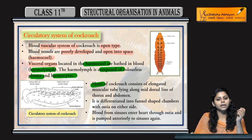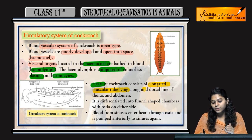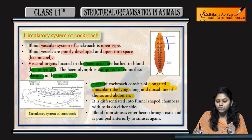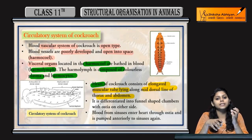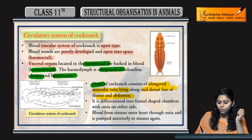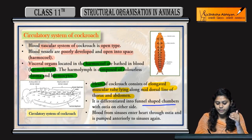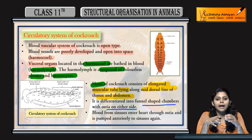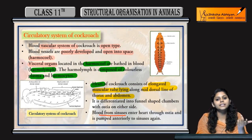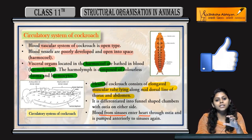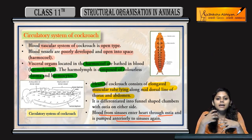The heart of the cockroach consists of an elongated muscular tube that lies along the mid dorsal line of the thorax and abdomen. It is differentiated into funnel-shaped chambers with ostia on either side. Blood from the sinuses enters the heart through the ostia and is pumped anteriorly to the sinuses again. This was all about the circulatory system of cockroaches.